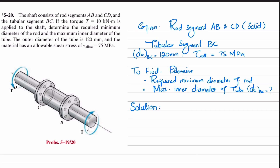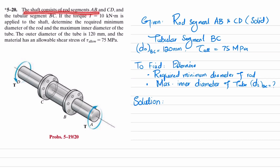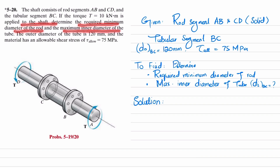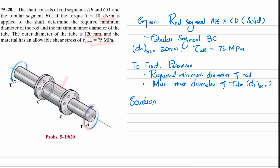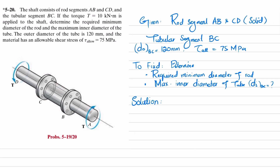Welcome back. Problem 5-20. In this problem, a shaft consists of rod segments AB and CD, and tubular segment BC. A torque of 10 kilo-newton-meter is applied to the shaft. Determine the required minimum diameter of the rod and the maximum inner diameter of the tube. The outer diameter of the tube is 120 millimeters and the material has an allowable shear stress of 75 megapascal. Segments CD and AB are solid shafts, while BC is a hollow tubular section.